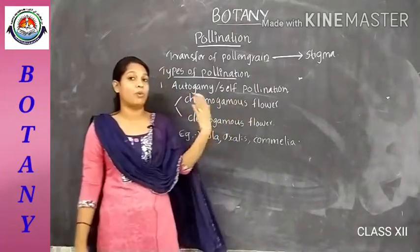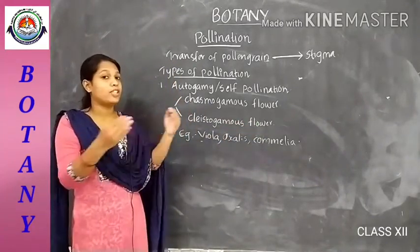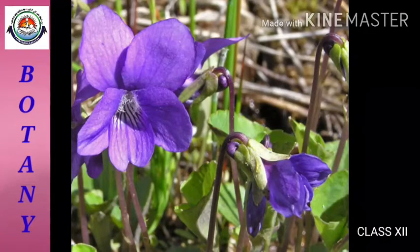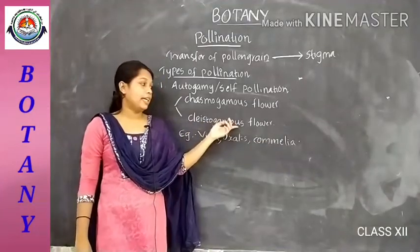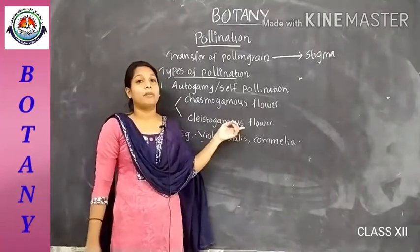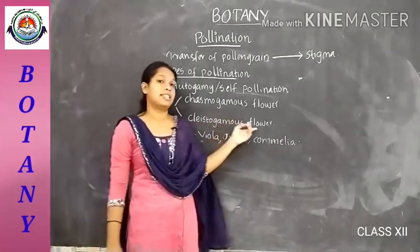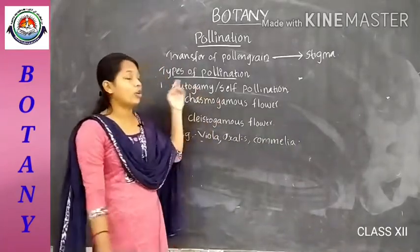In chasmogamous flowers, the anthers and stigma are exposed. In cleistogamous flowers, the flower is partially opened and closed within the flower structure, so the chance of occurrence of self-pollination is higher in this case. These distinctions can be seen in the diagram shown.